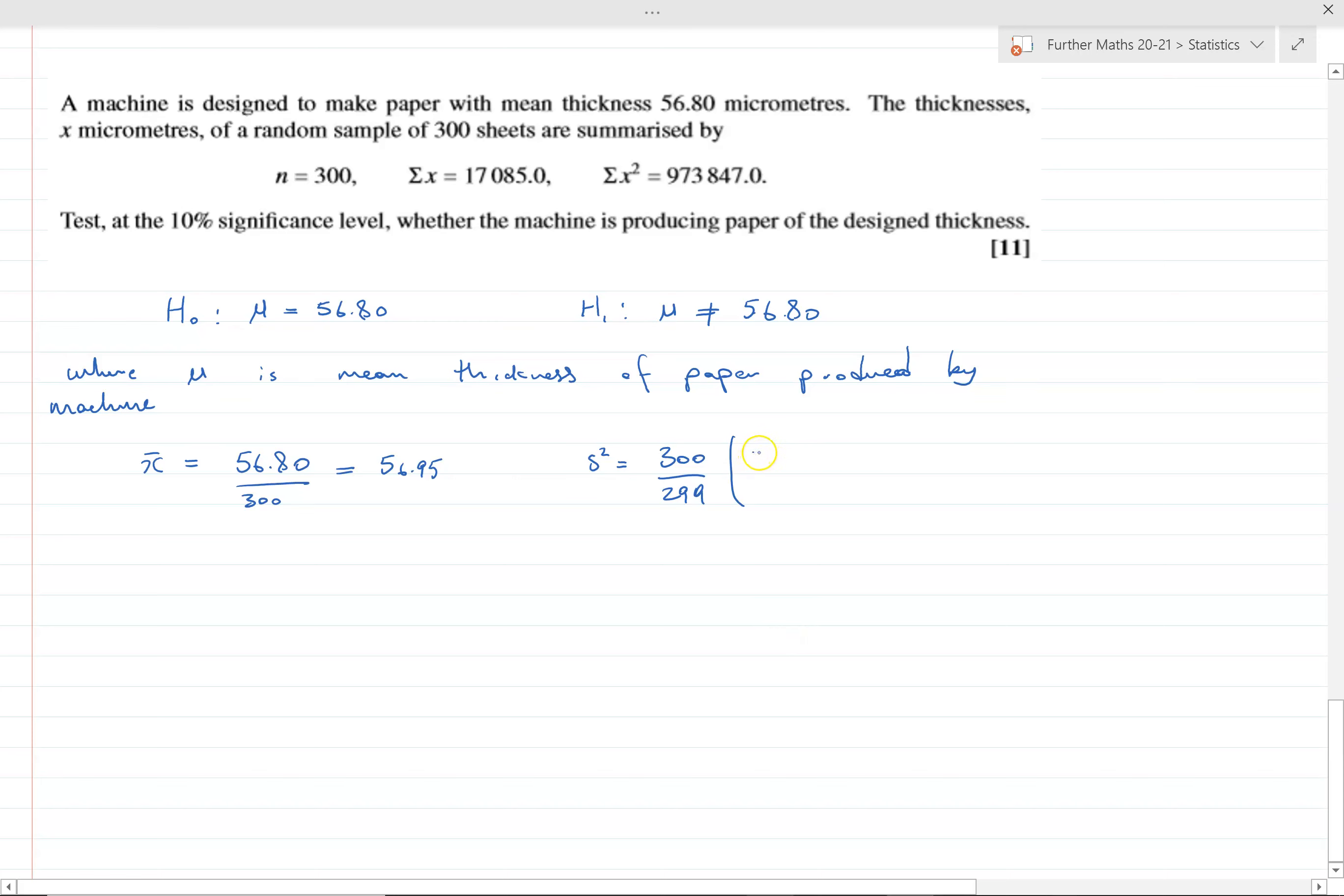The way I normally do this is times by the ratio 300 over 299 of the sum of the squares, so that's σx² = 973847.0 take away this number squared. That comes to 2.8637. Remember that's the estimate for the variance, not the standard deviation. The standard deviation is the square root of that.